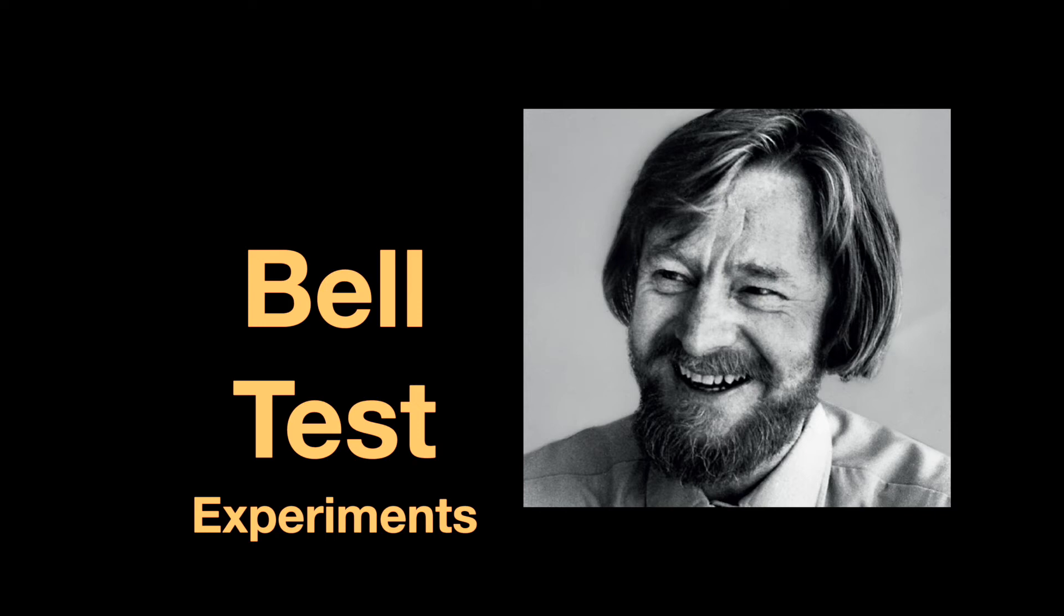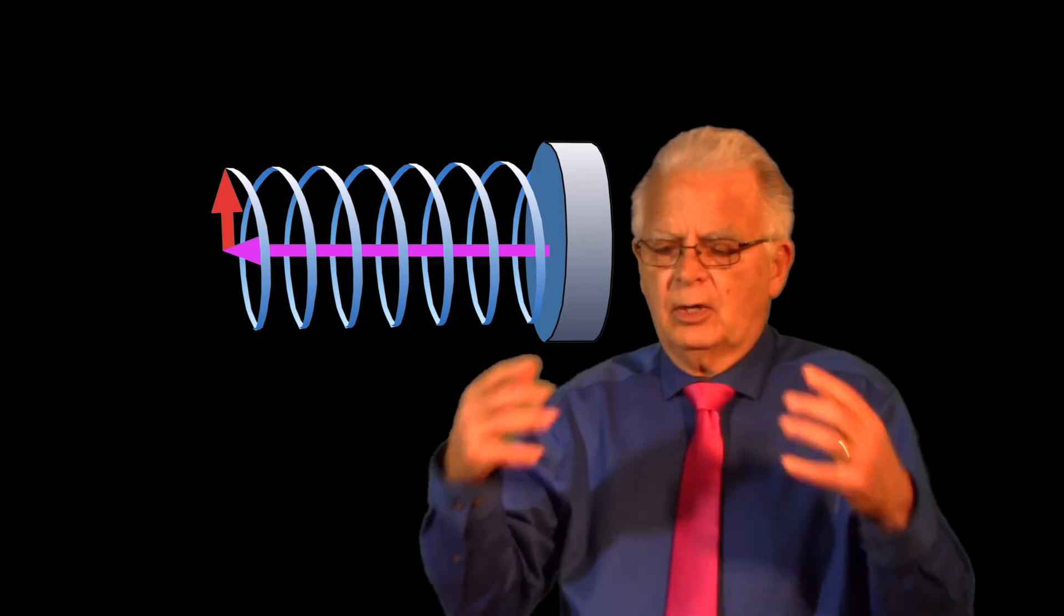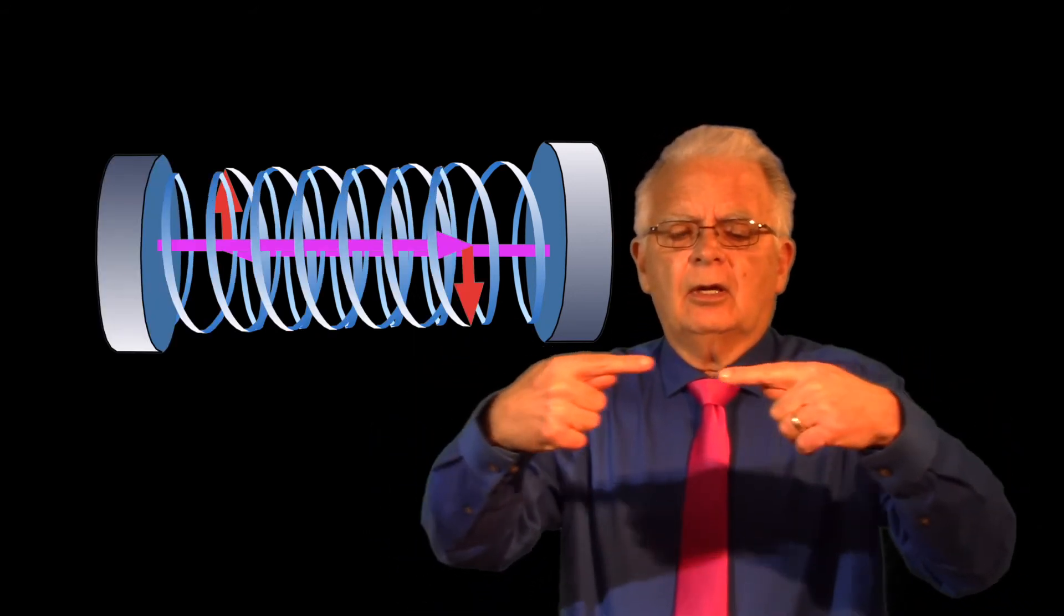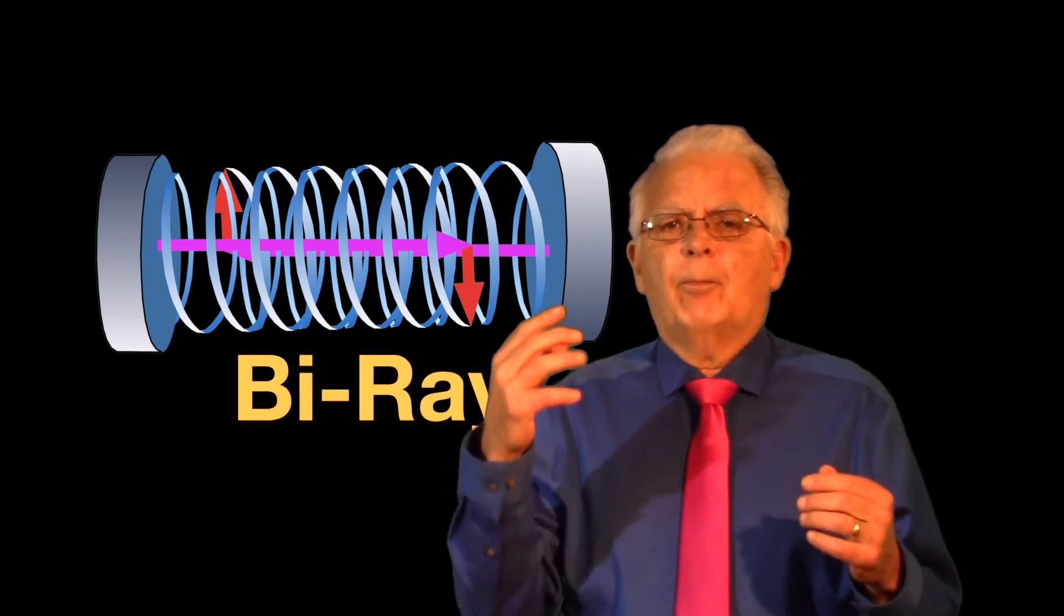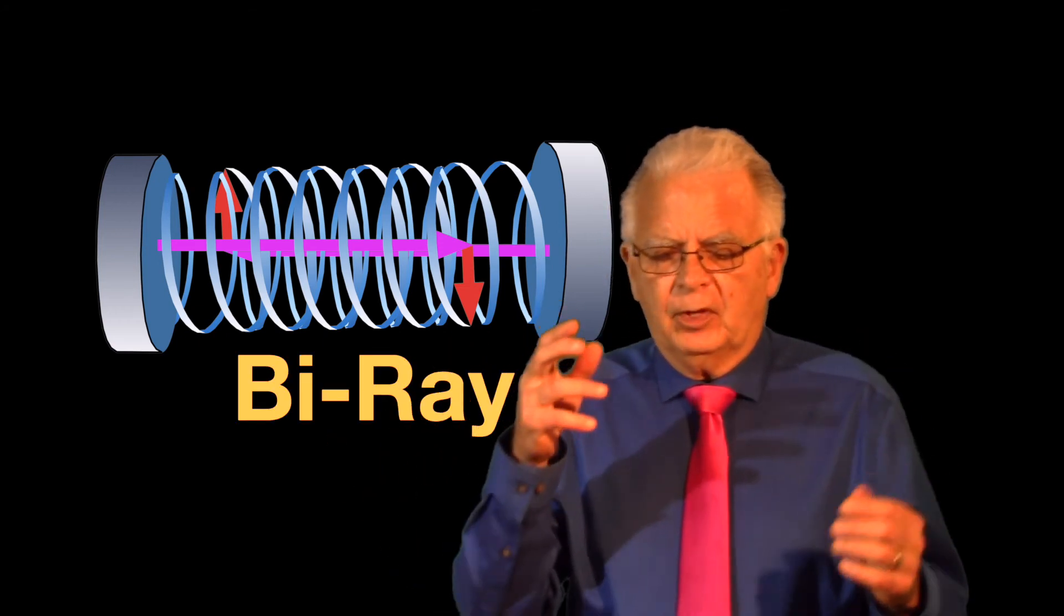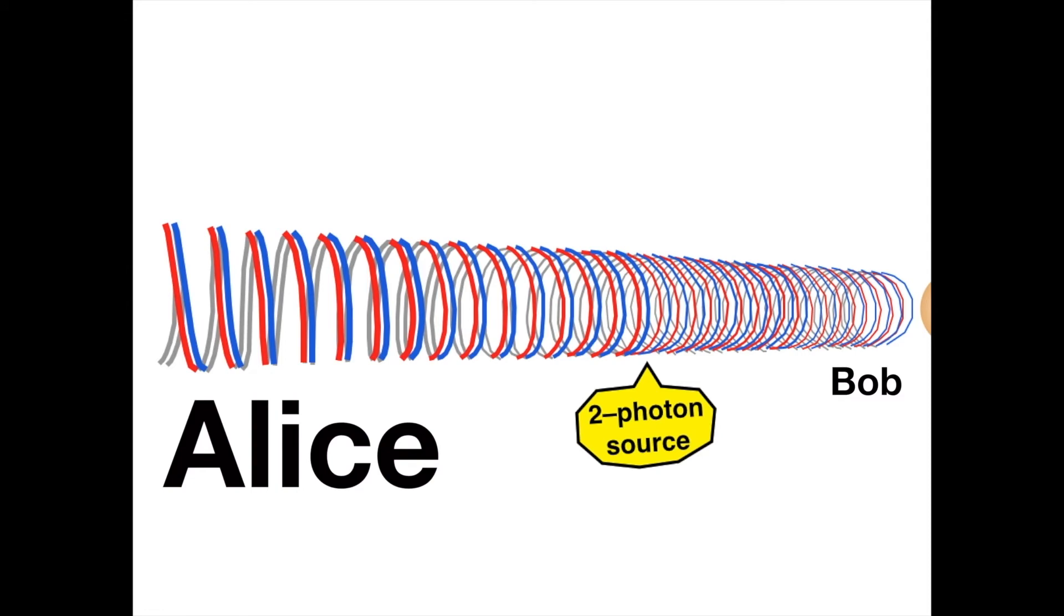I now want to turn to another subject, which is the Bell test experiments. If you think of all the space being filled with elementary rays going in every direction at the speed of light, that implies that each elementary ray has a mate, namely a coaxial elementary ray going at the speed of light in the opposite direction. We call this a bi-ray, and it turns out that entangled photons, or any entangled pair of particles, follow the same bi-ray in opposite directions. Imagine this is a picture of a bi-ray, two slinkies, one red and one blue, threaded together, traveling in opposite directions at the speed of light. And the bi-ray stretches from Alice on the left through a two-photon source to Bob on the right.